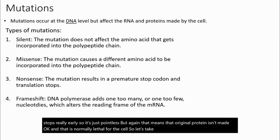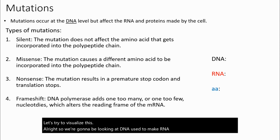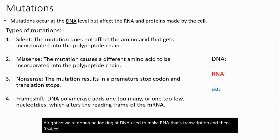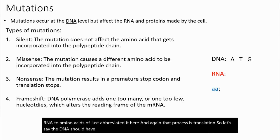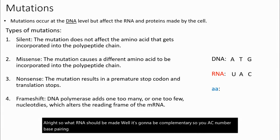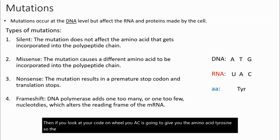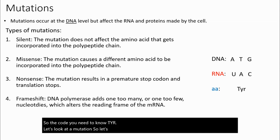Let's visualize this. We'll look at DNA used to make RNA — that's transcription — and then RNA to amino acids, which is translation. Say the DNA should have been ATG. The complementary RNA would be UAC, using RNA base pairing rules with no thymines. Looking at your codon wheel, UAC codes for the amino acid tyrosine, abbreviated TYR.